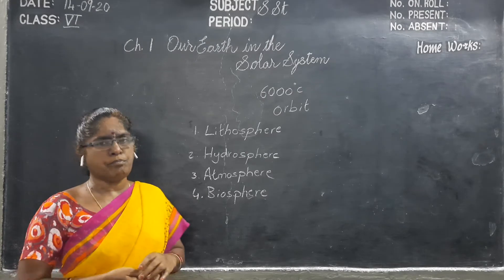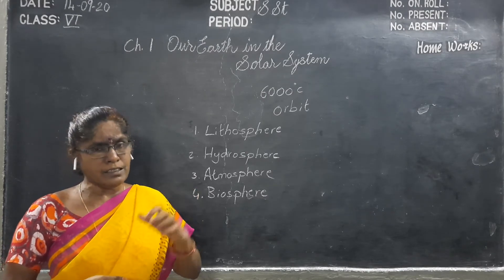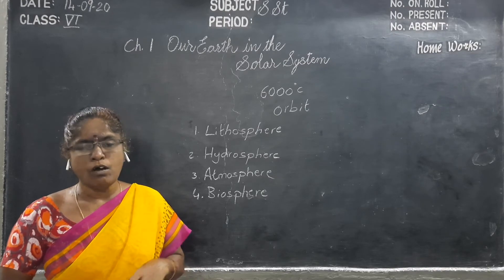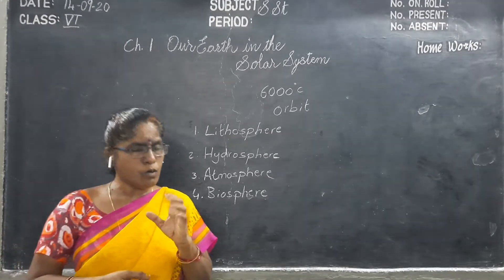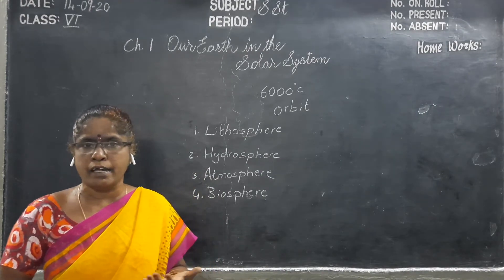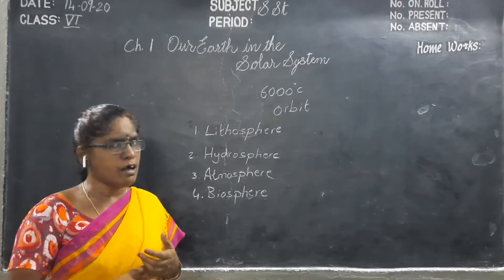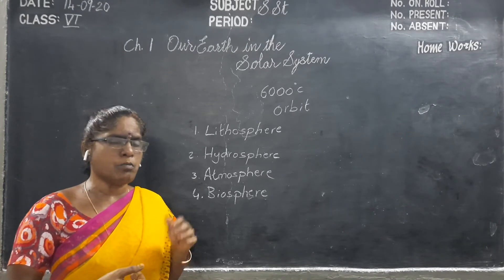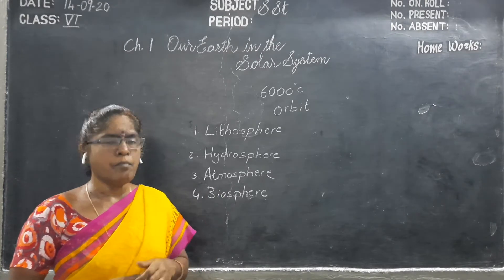Next, hydrosphere. The hydrosphere consists of all the water bodies on this Earth. Water bodies include oceans, rivers, seas, lakes, streams — all come under the hydrosphere. That means all the water bodies on this Earth come under the hydrosphere.